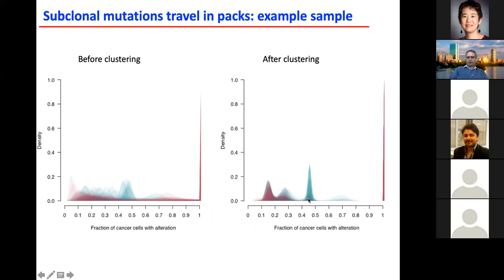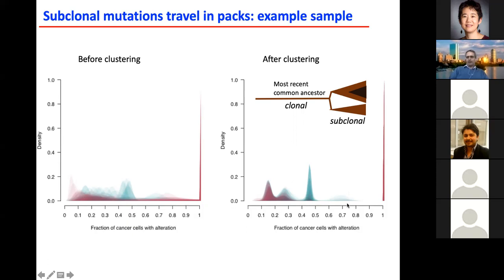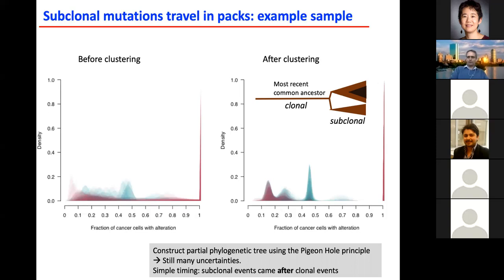These mutations all share the same allele fraction. Using this allele fraction, we could start to build phylogenetic trees of cancers even from a single sample — some mutations are in 70% of the cells, others in roughly 45% of the cells. The clone with those 70% mutations must include the 45% subclone, because 45% plus 70% exceeds 100%. So even from a single sample, we could build phylogenetic trees using the pigeonhole principle.